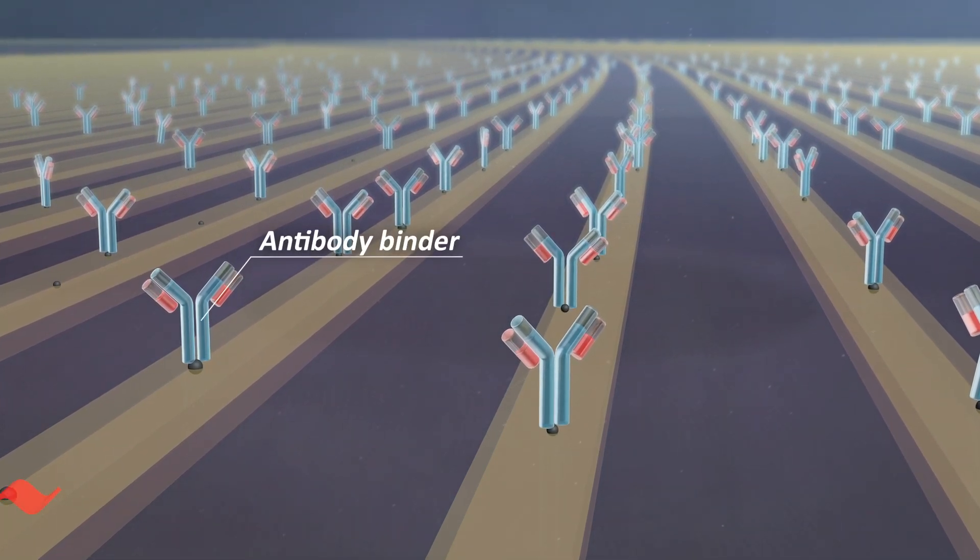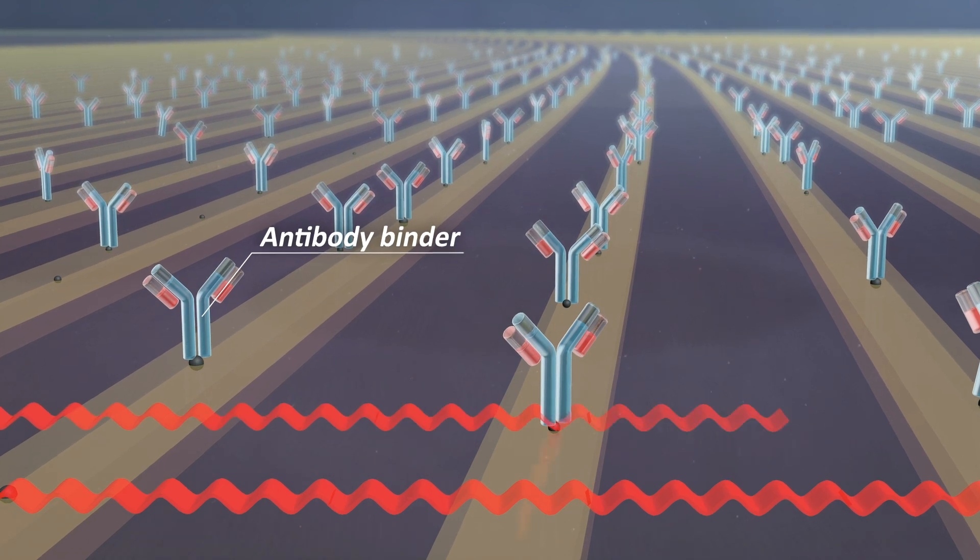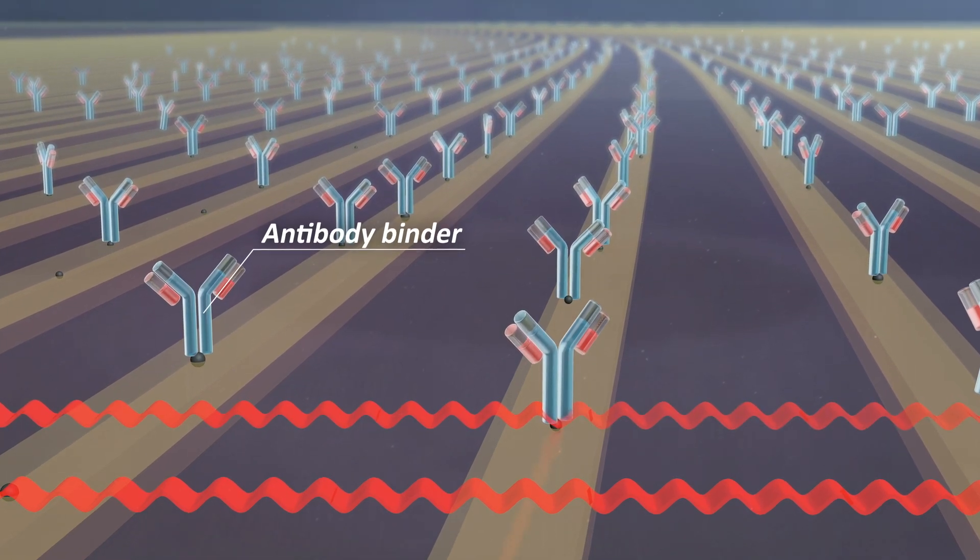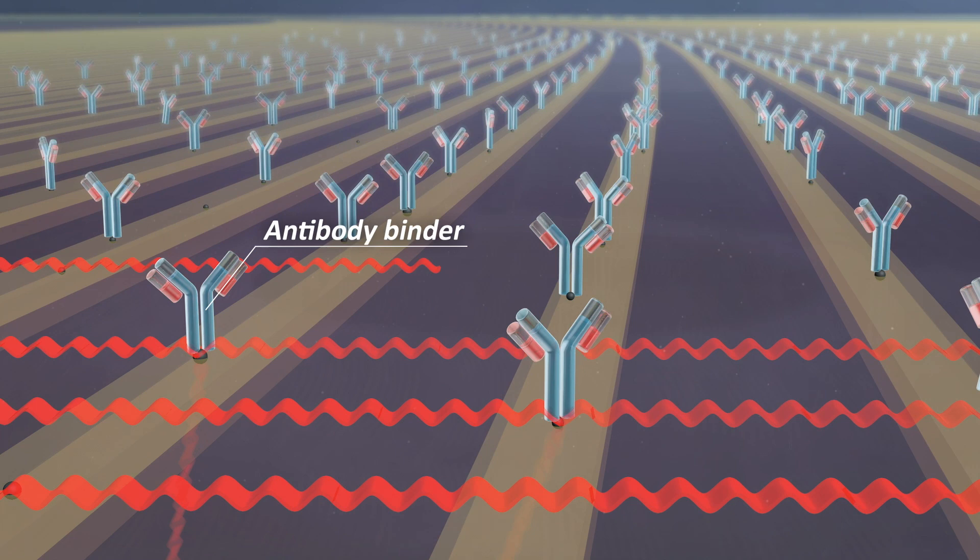Functionalization, for example with antibodies, leads to a biologically active affinity pattern with active lines and inactive areas between the lines.